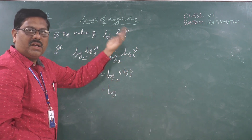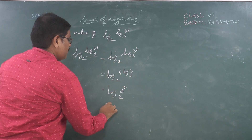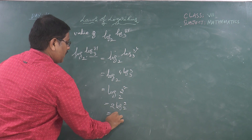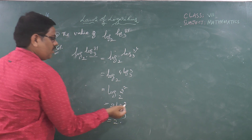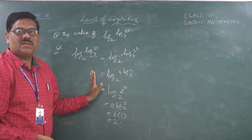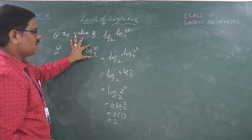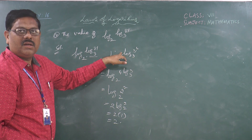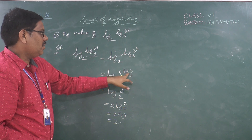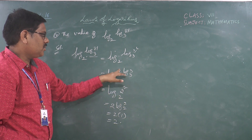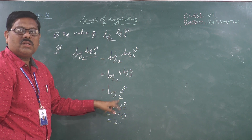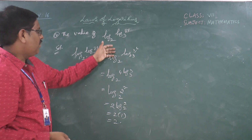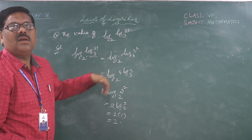Now we have log 4 to the base 2. We can write 4 as 2², so log 2² to the base 2. According to the power rule, this is 2 times log 2 to the base 2, that is 2 times 1, which equals 2. So the final answer is 2. We used the power rule twice: first writing 81 as 3⁴, then writing 4 as 2². Now let us move to the next question.